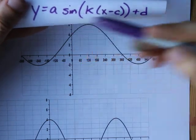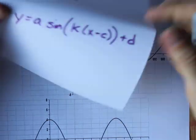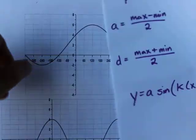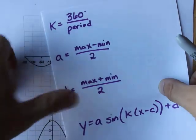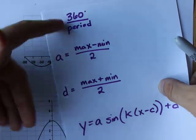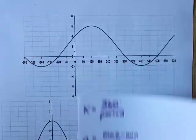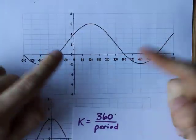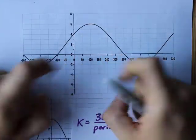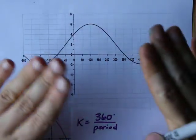We are going to find the sine equation for three different graphs together. There are some shortcuts you can use, whether or not you're given the formulas. How are you going to find the equation given the graph of a sine function?